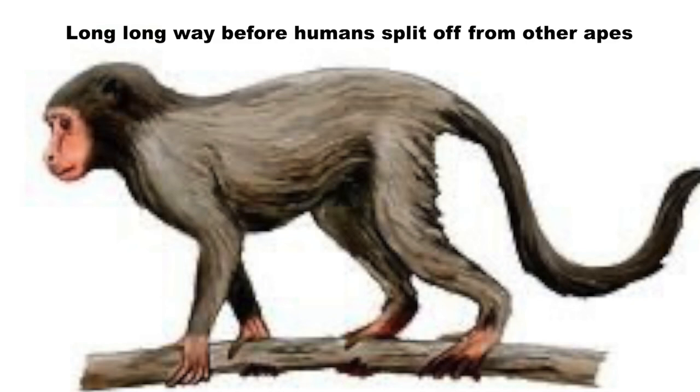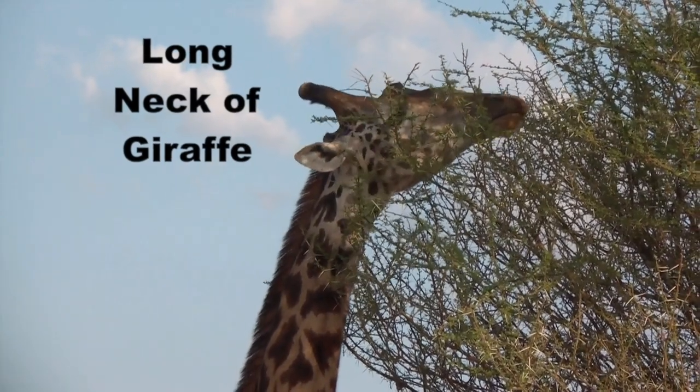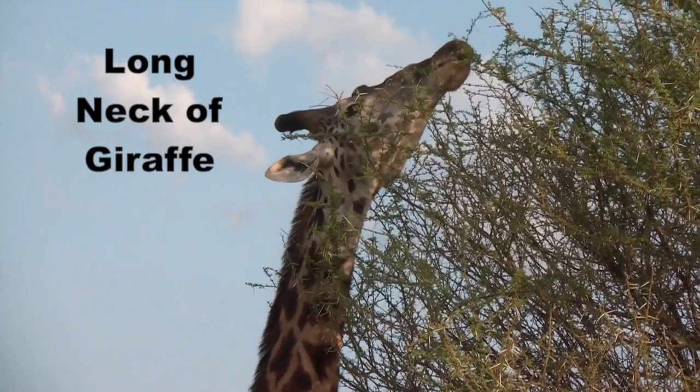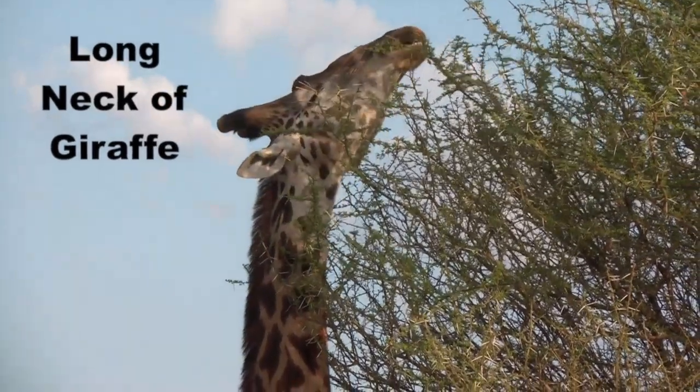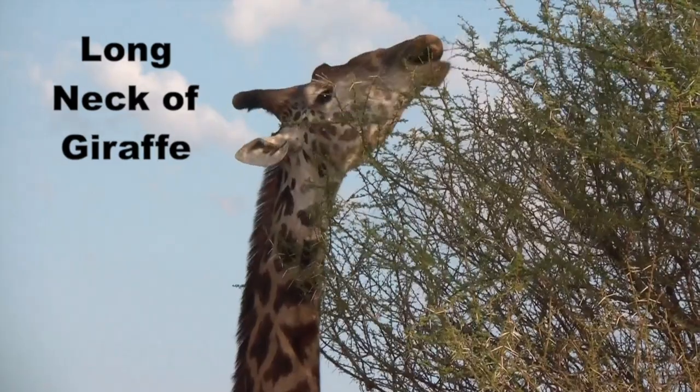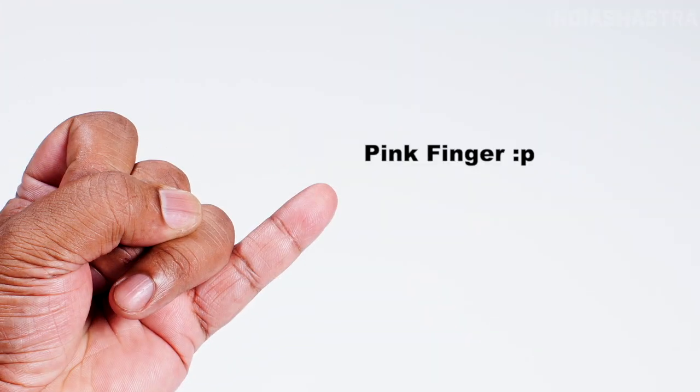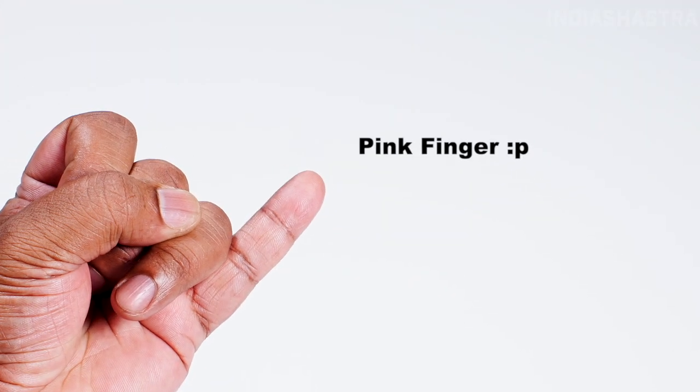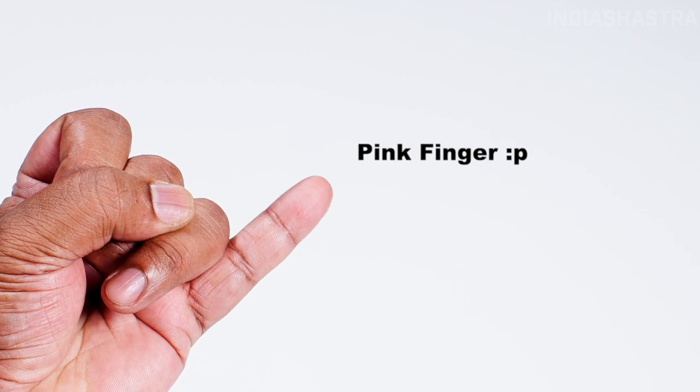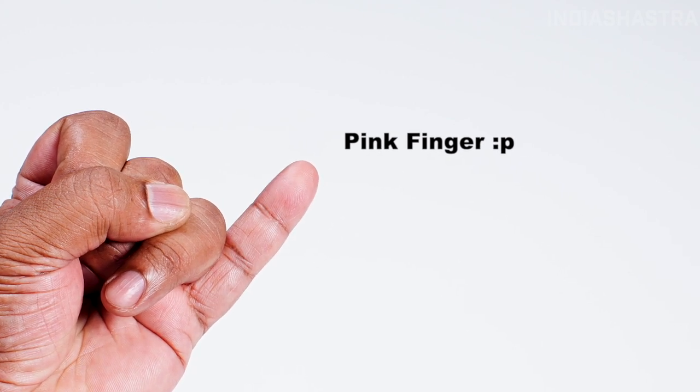Our ancestors had tails but got rid of them because when they moved from trees to planes with a nomadic lifestyle, tails reduced their functional role. Similarly, Giraffe evolved long necks because extra vertebrae help them access tender leaves on top of trees. Studies say the pinky finger may disappear in future because it contributes less.